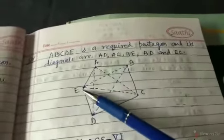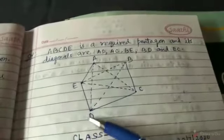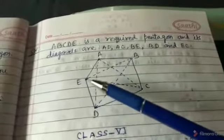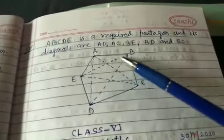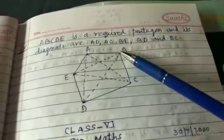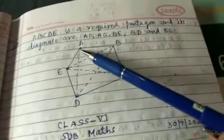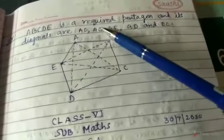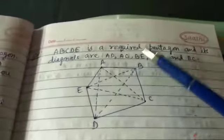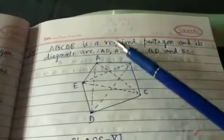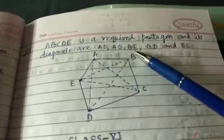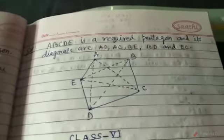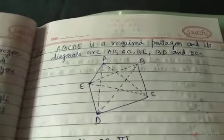This is a rough sketch of pentagon ABCDE. A regular pentagon is not specified here, so any five-sided figure works. By joining opposite vertices — EB, EC, AD, DB, and AC — we get five diagonals. The diagonals are AD, AC, BE, BD, and EC. ABCDE is the required pentagon. Thank you.